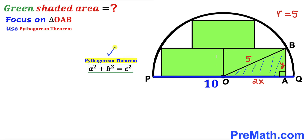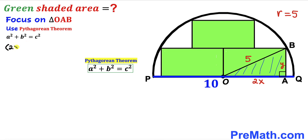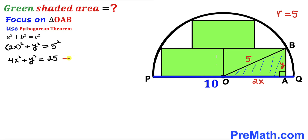We are going to apply the Pythagorean theorem on this triangle: a² + b² = c². In our case the hypotenuse is 5, and the two other legs are 2x and y. So we get (2x)² + y² = 5², which gives us 4x² + y² = 25. I'm going to label this as Equation 1.